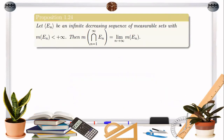Now let's have this proposition. Let E sub n be an infinite decreasing sequence of measurable sets, with the Lebesgue measure of E sub n being finite. Then the Lebesgue measure of the intersection of E sub n, where n is from 1 to infinity, is equal to the limit of the Lebesgue measure of E sub n as n approaches infinity.